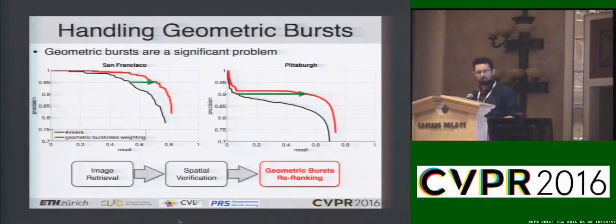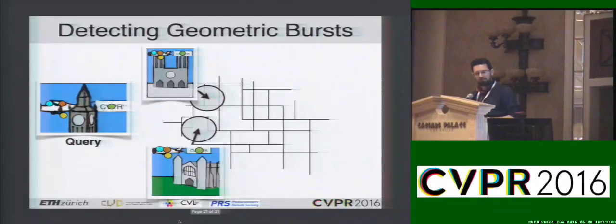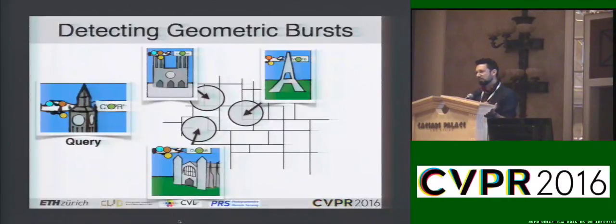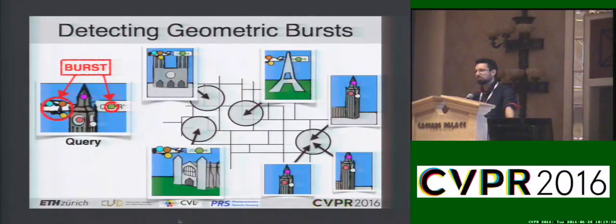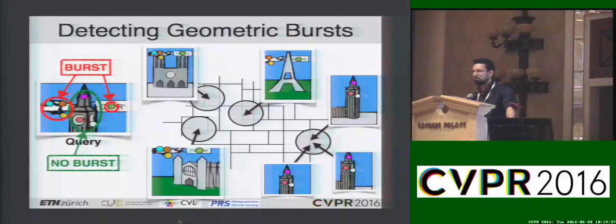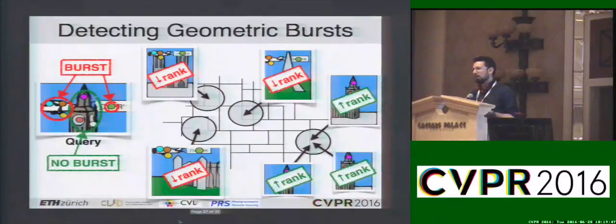How do we detect and handle geometric bursts? There's a query and a top retrieved database image, where the colored points denote inlier features. If we also retrieve two images taken at different places, we can see that the same features in the query image are inliers to more than one place — meaning by definition they have to be part of a geometric burst. Importantly, we reason about places, not about images, because it's not uncommon to have multiple images taken at the same place, and we don't want to rate that as a geometric burst since it's a unique configuration to that place. Once we have detected bursty features, we downweight their influence in the hope of upranking relevant images and downranking irrelevant ones.